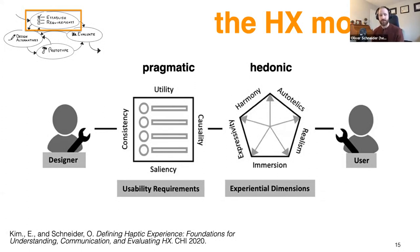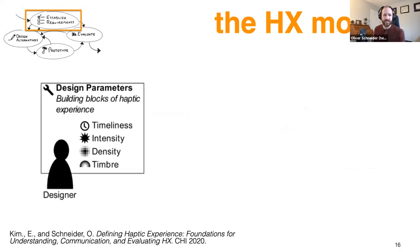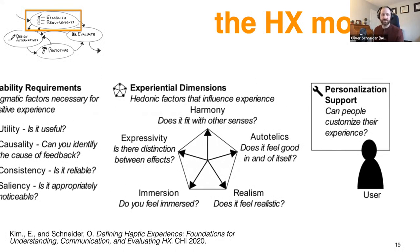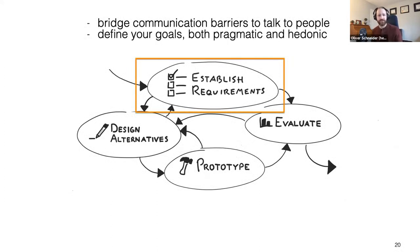You may not need realism and immersion in all cases — for a low-attention wearable, you may not want it to be terribly immersive. Expressivity means having high bandwidth: if a device can only display two or three types of sensations, it won't be as engaging as something really expressive. I suggest you take a look at the paper, which has more detail including personalization, which is really critical to make sure these experiences fit everyone. That's establishing requirements and your goals — both pragmatic and hedonic.